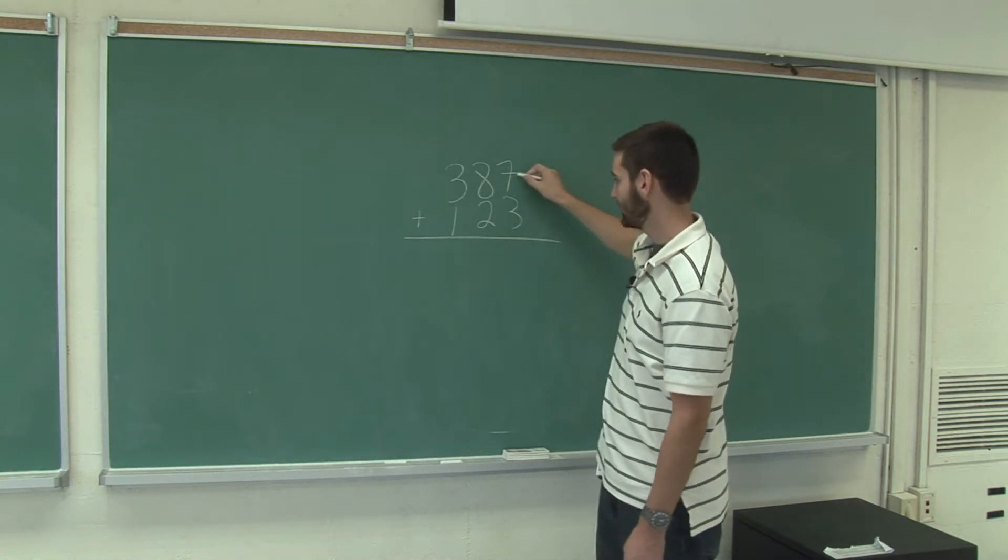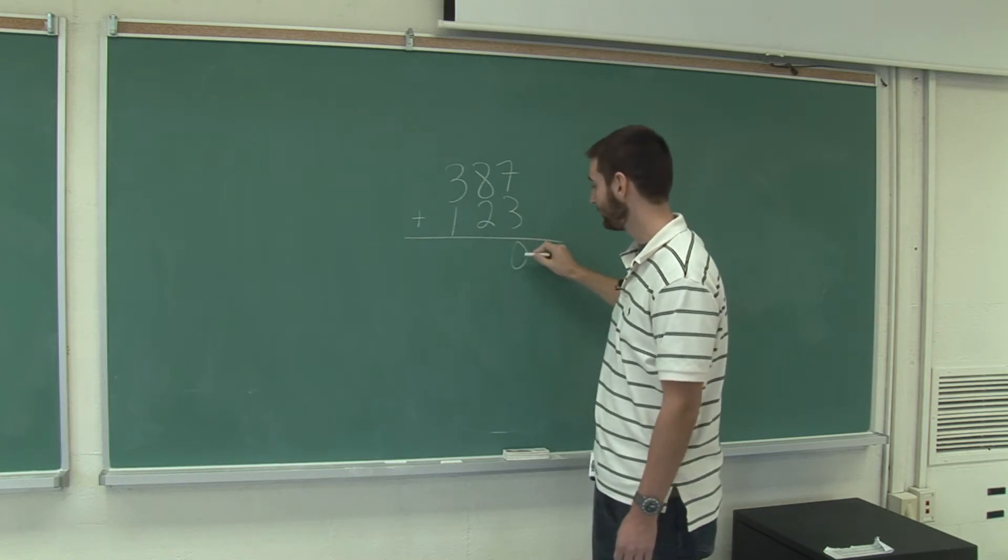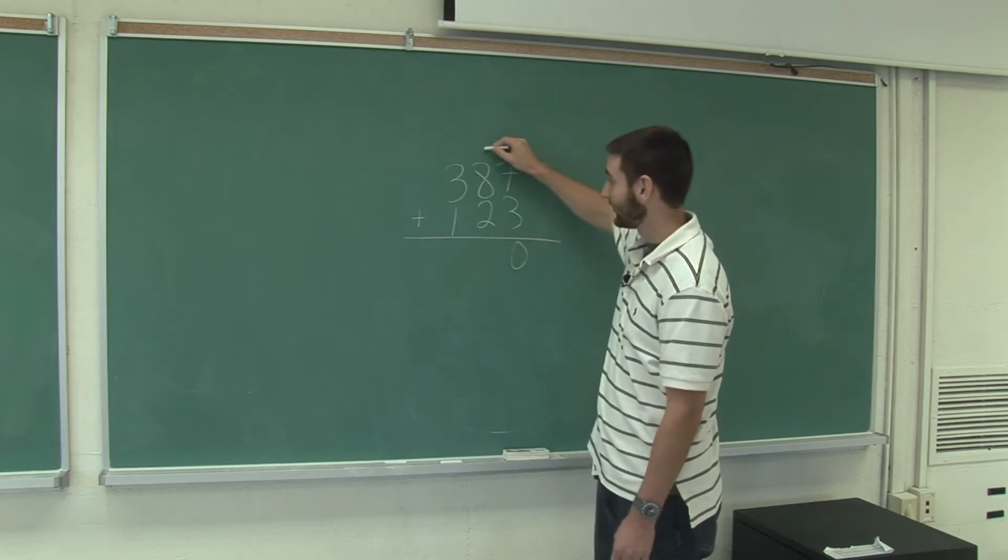So let's start with the unit column. 7 plus 3 is 10. Since we can't fit a 10 in the unit column, we're going to put a 0 and add the 10 up to the next column.